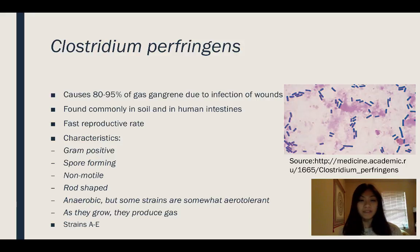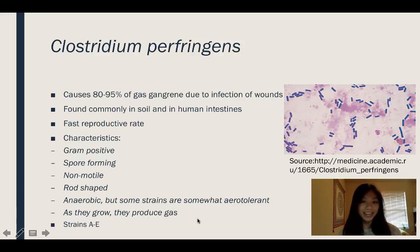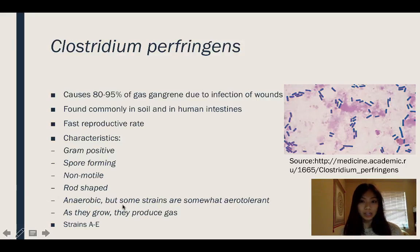The most important characteristics of this bacteria are that it's anaerobic, and as they grow, they produce gas — and that's why it's called gas gangrene. These two characteristics are what's really going to determine its pathogenesis, which I'm going to talk about later.